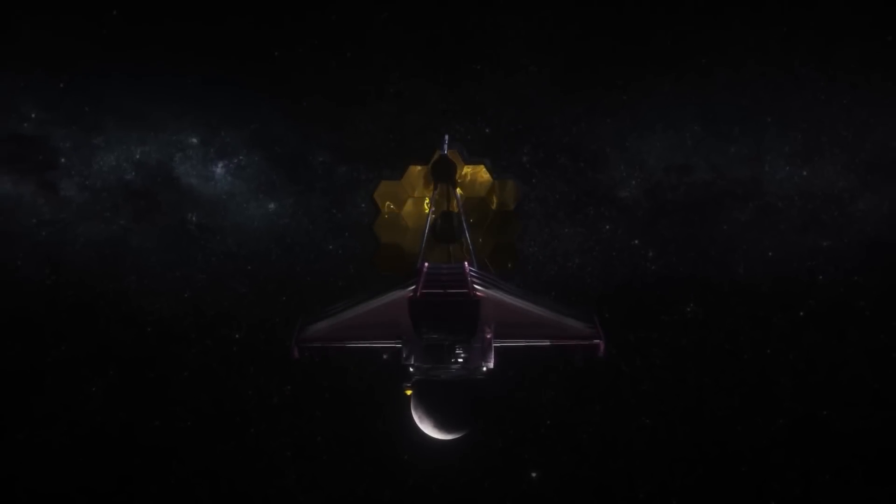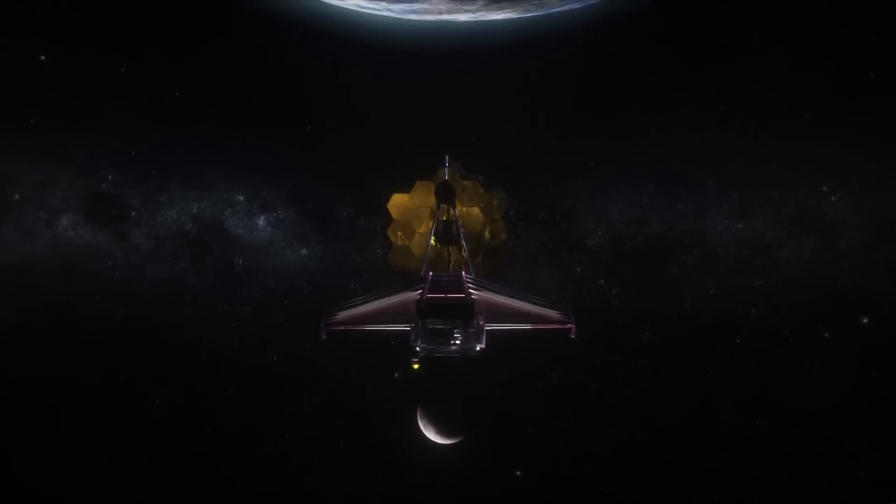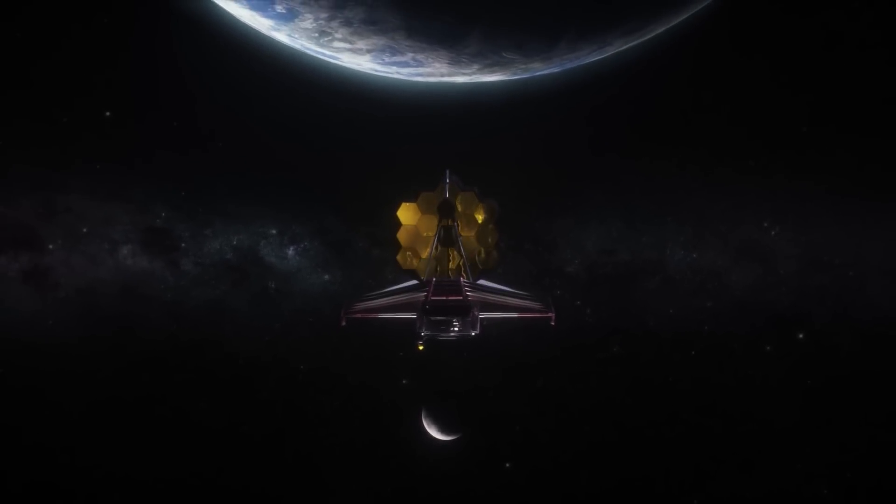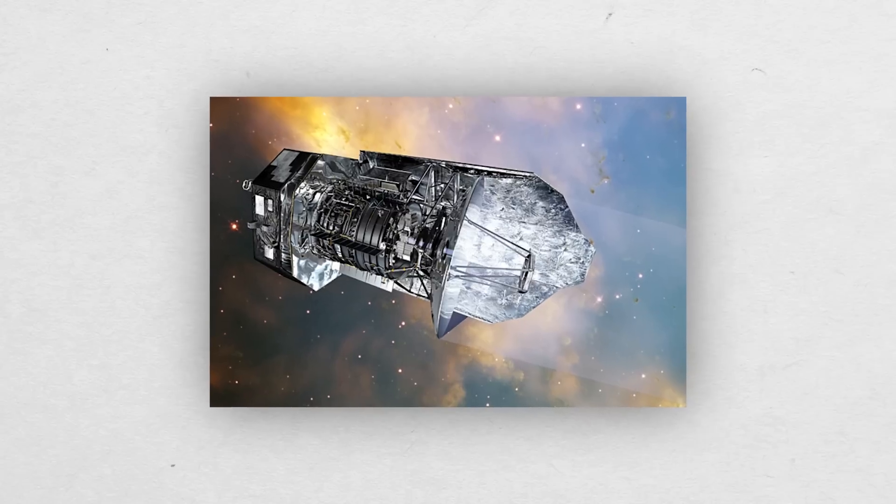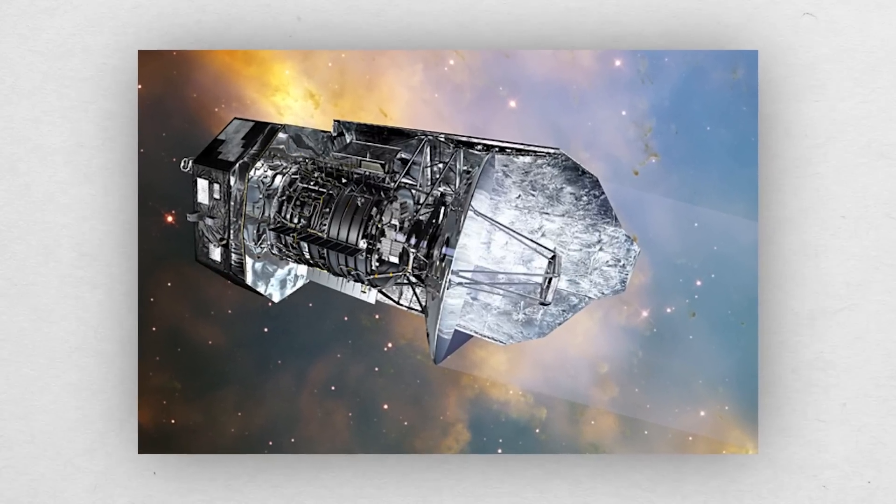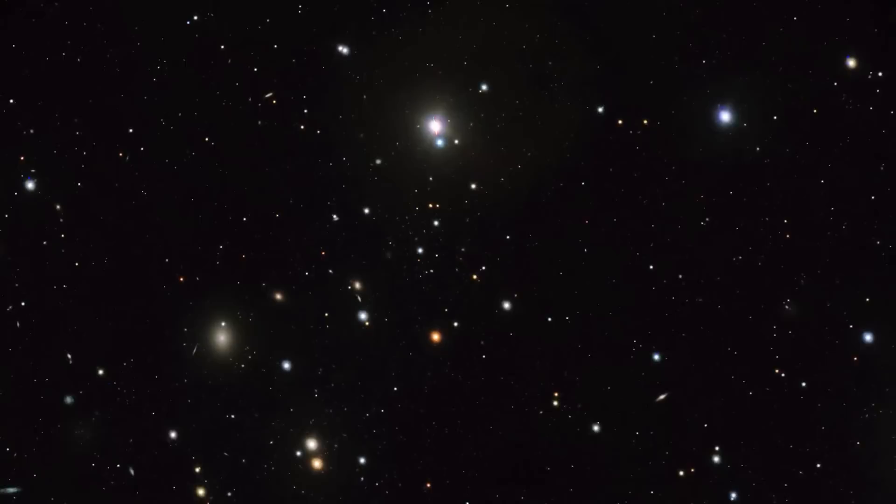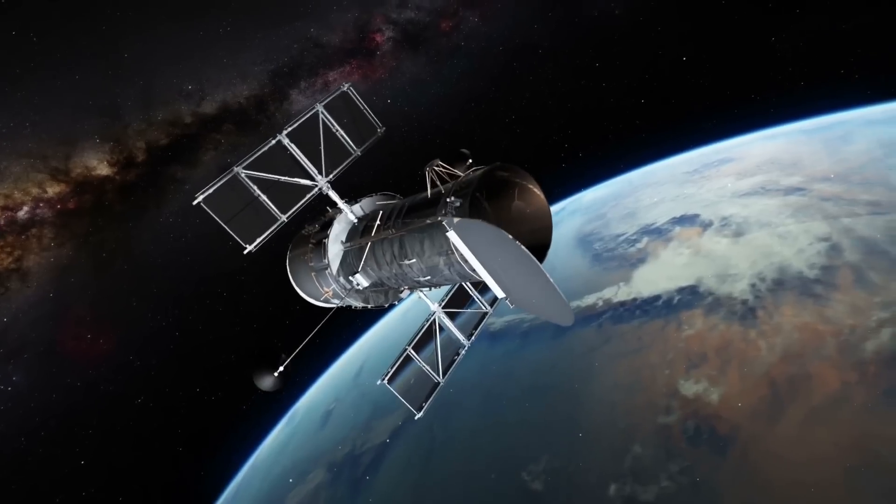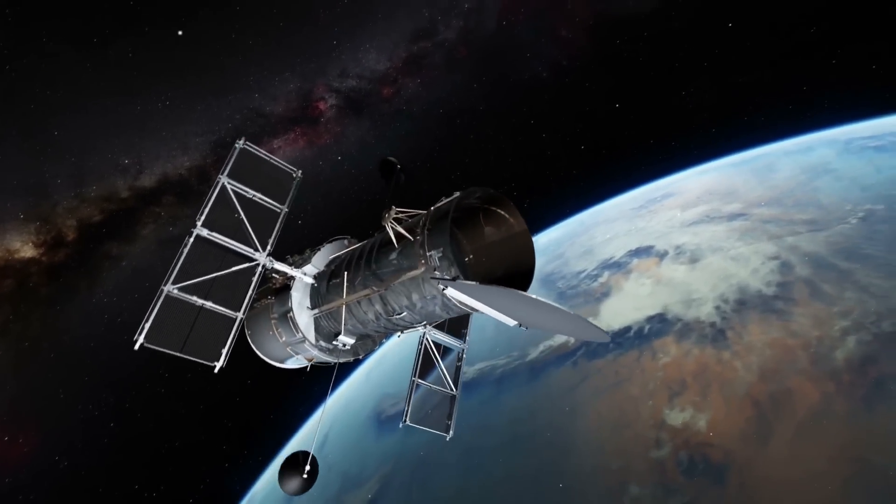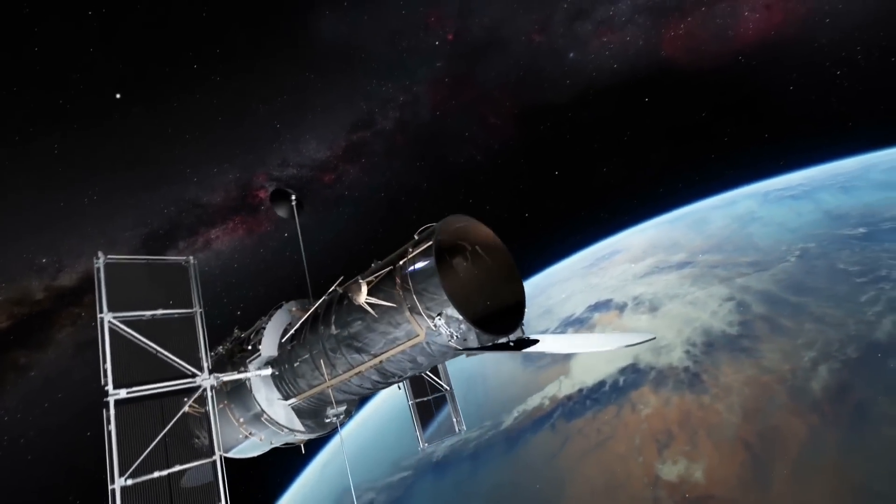The Webb telescope will be situated at the L2 point, roughly 1 million miles from Earth, according to NASA's JWST website, following in the footsteps of ESA's Herschel Infrared Observatory. Webb will have a vision of the universe that is significantly clearer than Hubble's from low Earth orbit as a result of this, but there is a drawback.